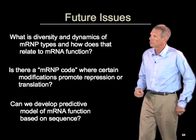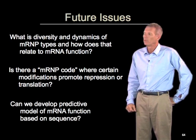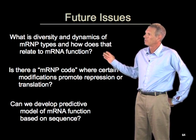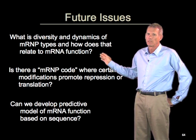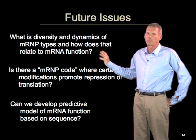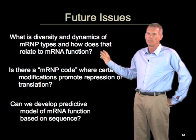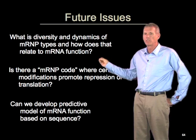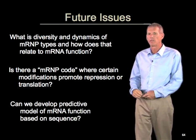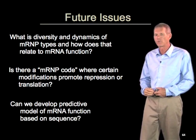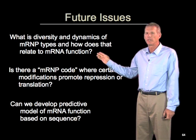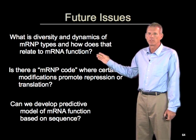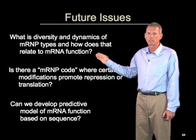This leads to a number of different issues for the future. One of the things we don't understand very well is the diversity and dynamics of mRNA RNP types and how that relates to RNA function. We can think about RNA-protein complexes analogously to DNA-protein complexes, but the difference is that DNA is relatively homogeneous, whereas RNAs can be extremely heterogeneous and fold into much more complex and diverse structures, suggesting a tremendous diversity of different RNP types that we just don't understand yet.